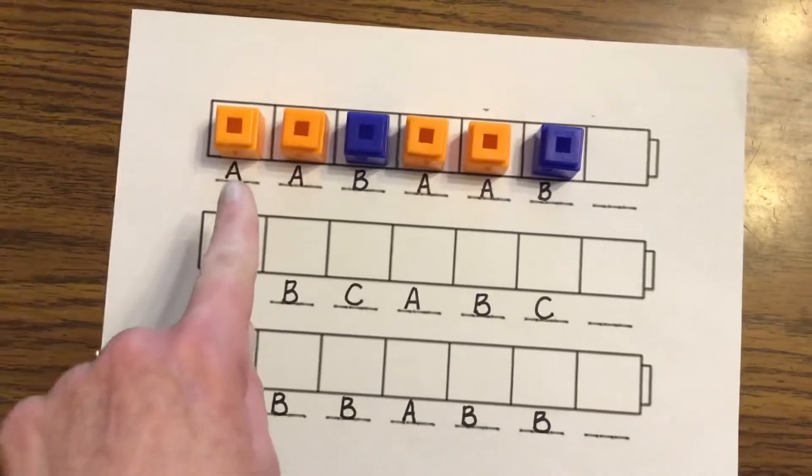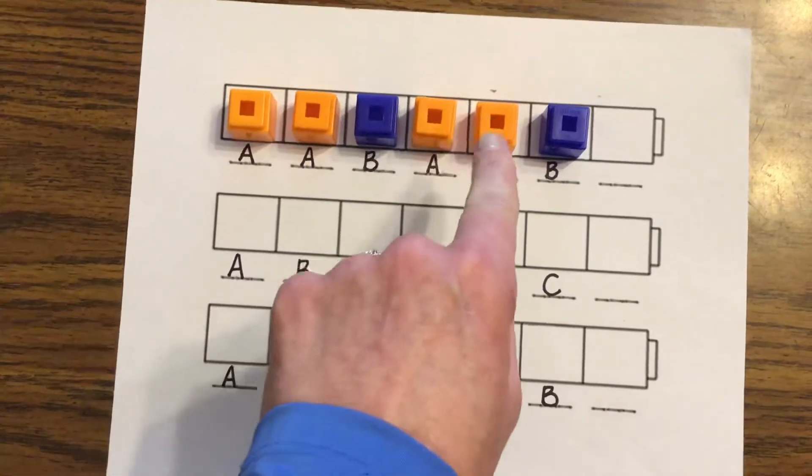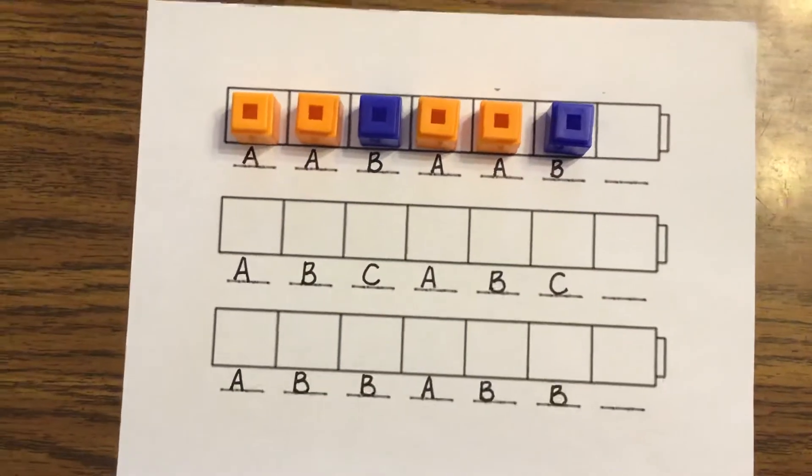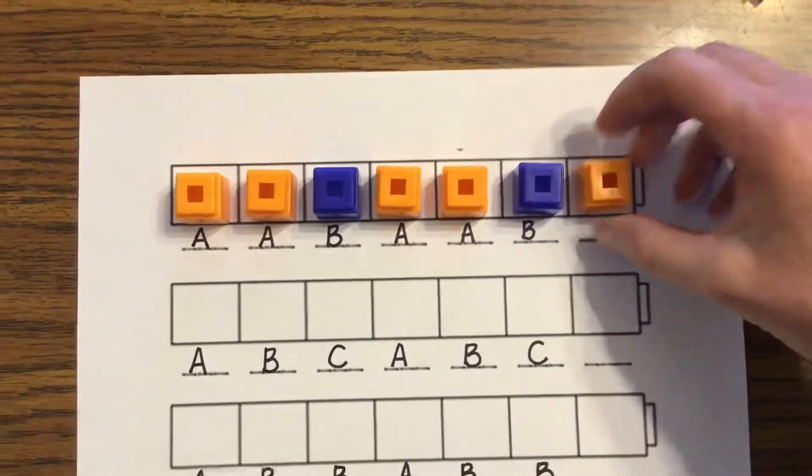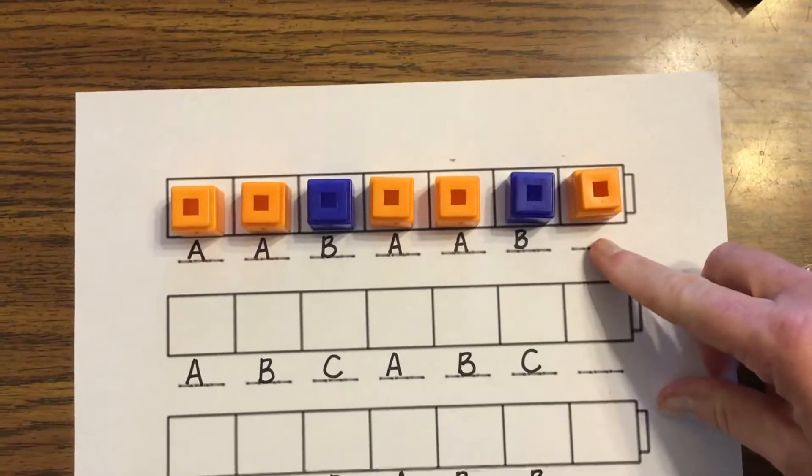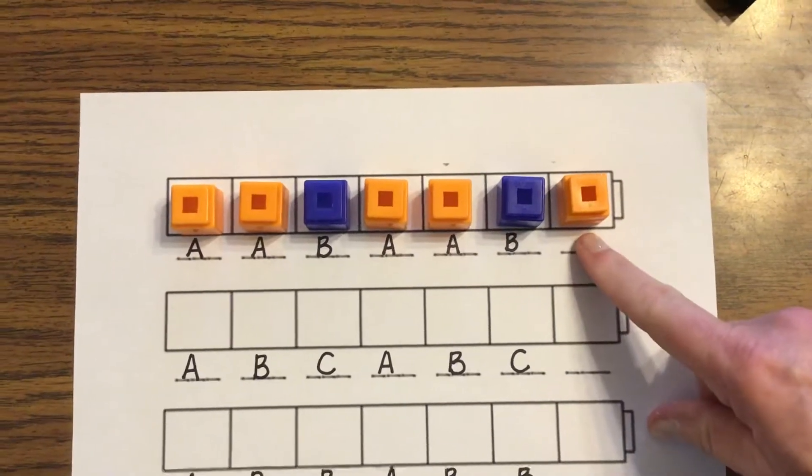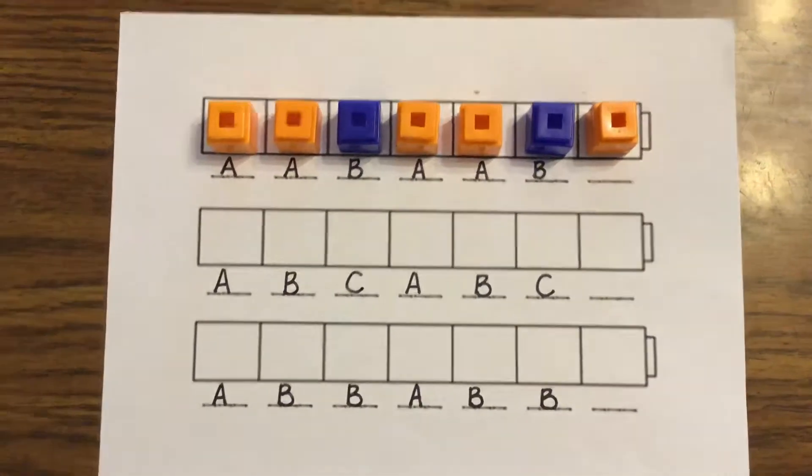Okay. Let's figure out the pattern. Orange, orange, blue. Orange, orange, blue. Orange comes next. Good job. And what letter would go on this line? A. Because my oranges are all A's. Wow. Awesome.